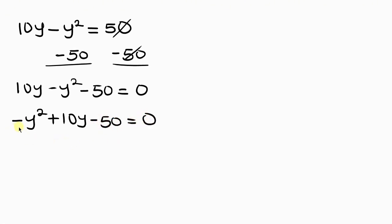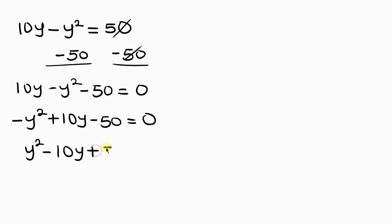Now arranging this quadratic equation, we have negative y squared plus 10y minus 50 equals 0. I would like to make the first term positive, so I multiply through by negative 1: negative 1 times negative y squared gives positive y squared, negative 1 times 10y gives negative 10y, and negative 1 times negative 50 gives positive 50, all equal to 0.